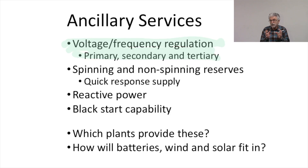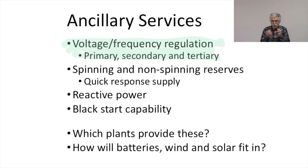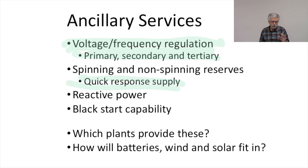We need to have spinning and non-spinning reserves — reserves that can respond very quickly to changes in demand and supply. Suppose a power plant trips off somewhere; we need spinning reserves that can make up the deficit very quickly, and then non-spinning reserves that can be brought online reasonably quickly as demand and supply conditions change. Quick response supply is a key ancillary service that we need to find ways of compensating.